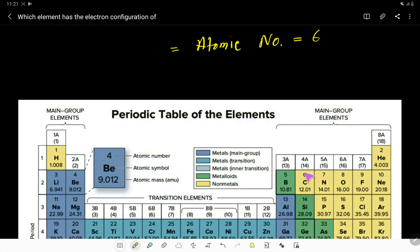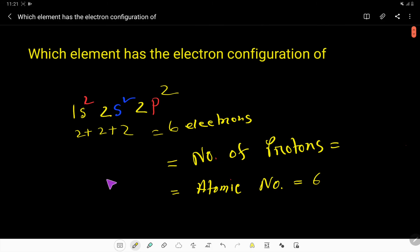Right, carbon is an element of group 14 or 4a. So this element is carbon and its atomic number is six.